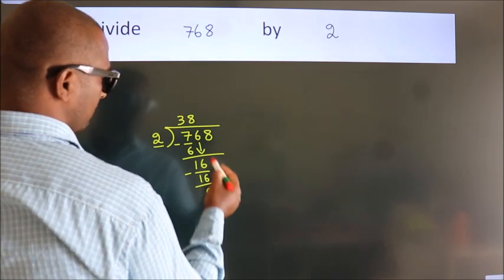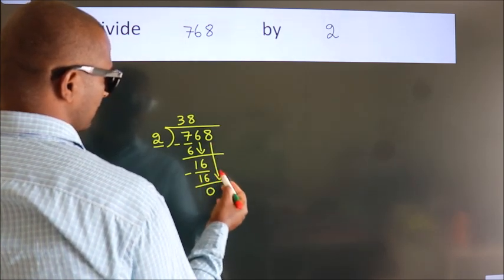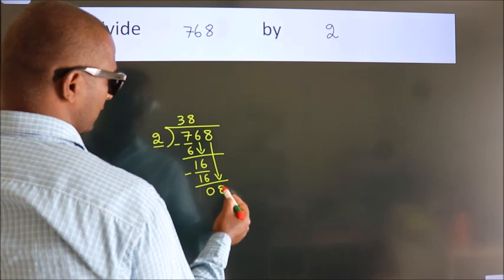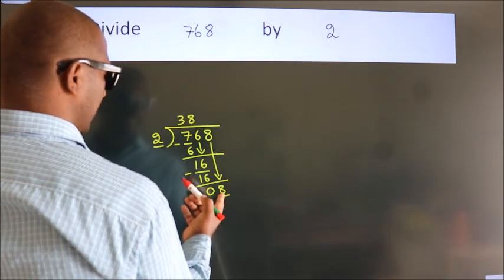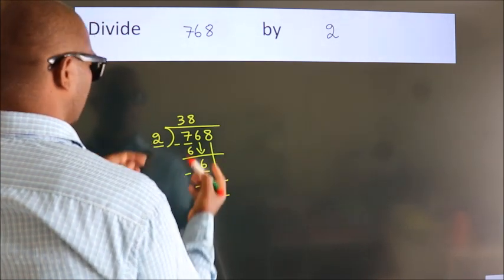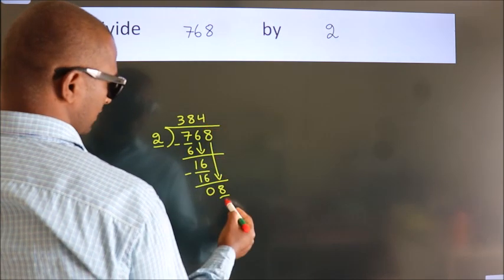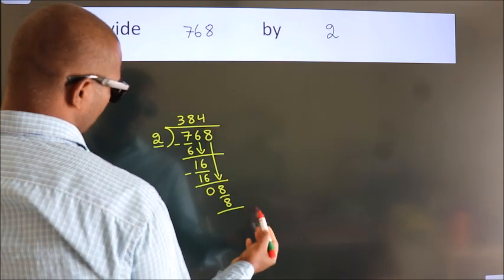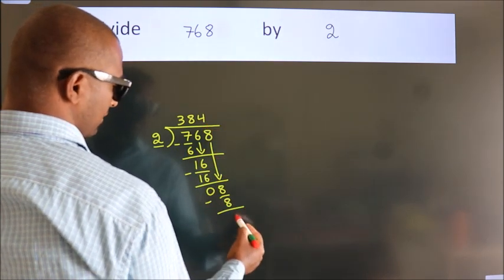After this, bring down the beside number. So 8 down. So 8. When do we get 8? In the 2 table, 2 fours, 8. Now we subtract. We get 0.